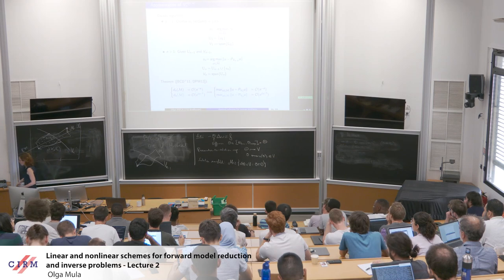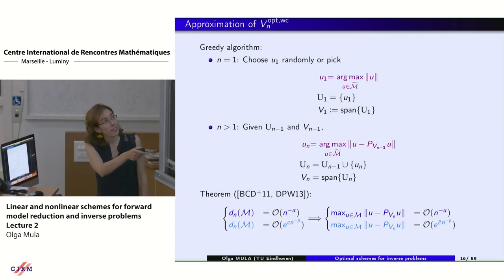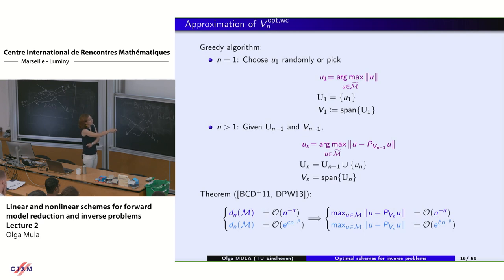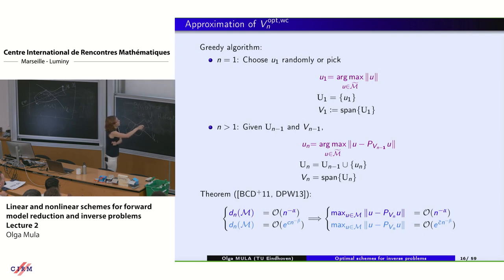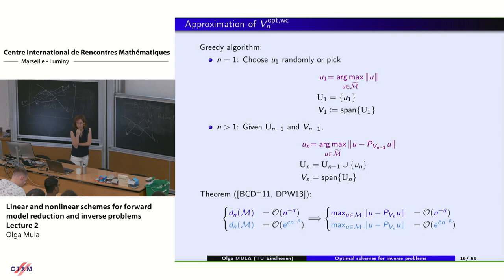It was proven by Binev, Cohen, Dahmen, DeVore and collaborators that if the Kolmogorov width decays at a certain rate — whether algebraically or exponentially — then the sequence of spaces Vn built with this greedy procedure presents the same rate of decay, with constants that differ only slightly. The main message is that the nature of the decay is preserved with the practical space we will actually use.